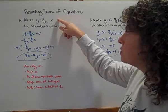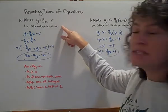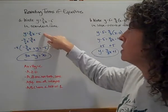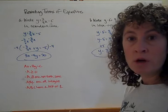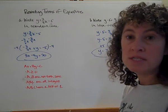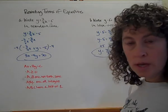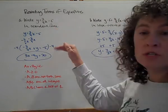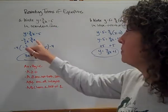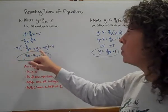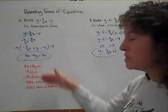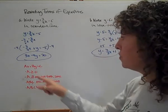Write y equals three-fourths x minus 5 in standard form. We're going to start with our equation the way it is. We want it to look like standard form, which is ax plus by equals c. I'm going to subtract three-fourths x from both sides, so now I have negative three-fourths x plus y equals negative 5. So the rules for standard form.